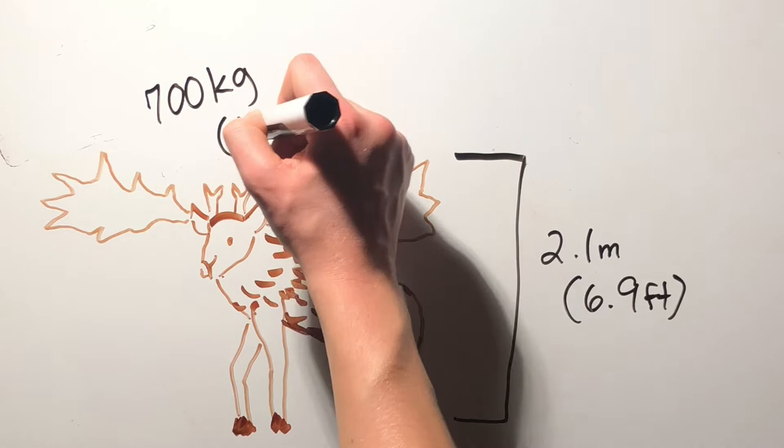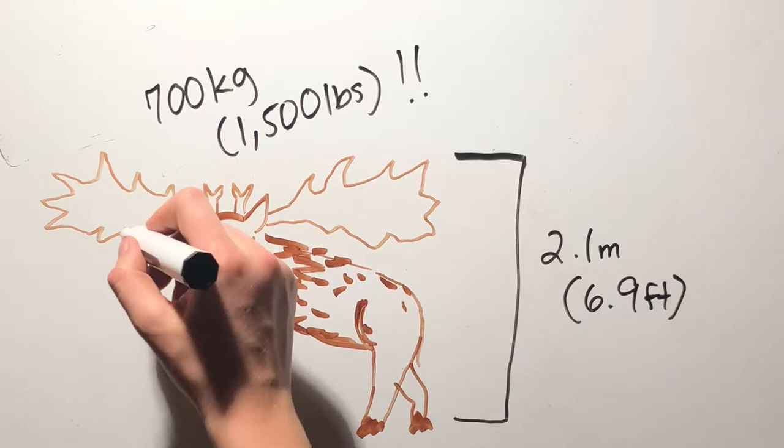The elk stood about 6.9 feet tall and weighed 700 kilograms or 1,500 pounds. Their antlers alone weighed 88 pounds.